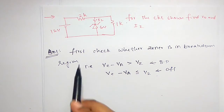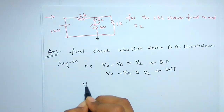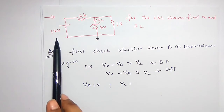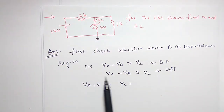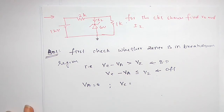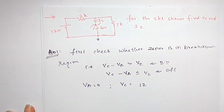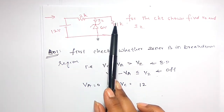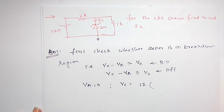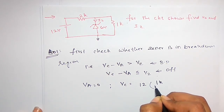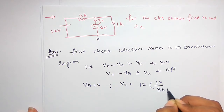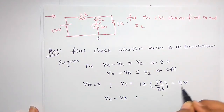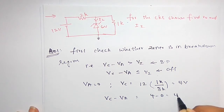Here the anode is connected to ground, so Va equals 0. Vz is not exactly 12 because there is a series circuit with 2 kilo ohms and 1 kilo ohm, so there is a voltage drop. Using the voltage division rule, voltage across 1 kilo ohm divided by total 3 kilo ohms gives 4 volts. So Vz minus Va equals 4 minus 0, which is 4, less than 6 volts.